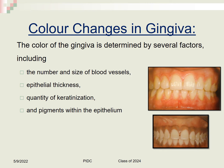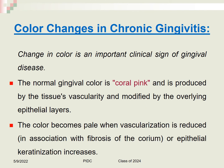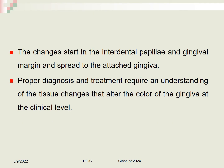Color changes in the gingiva are determined by the number and size of blood vessels, epithelial thickness, degree of keratinization, and pigments within the epithelium. The normal color is coral pink, produced by tissue vascularity modified by the overlying epithelial layers. Color becomes pale when vascularization is reduced or epithelial keratinization increases. Melanin pigmentation is sometimes racial. In disease, color changes start in the interdental papilla and gingival margin, then spread to the attached gingiva.